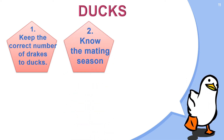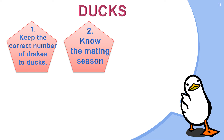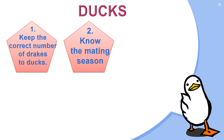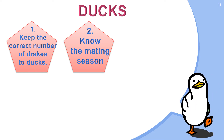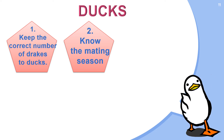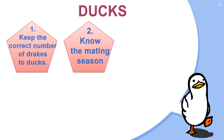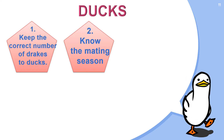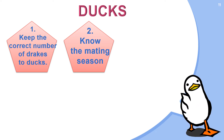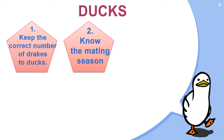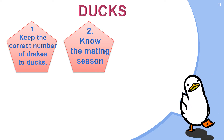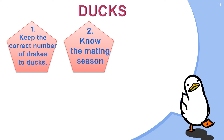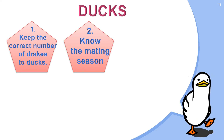Second, know the mating season. Mating is the process of breeding a pair of animals. While some domestic ducks will mate year-round, the typical mating season goes from late winter through spring to early summer. This is the most likely time that your ducks will show mating behavior and lay eggs.